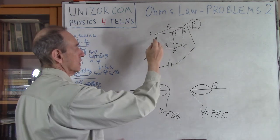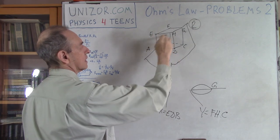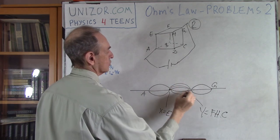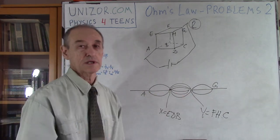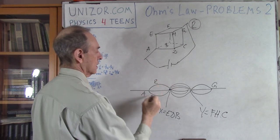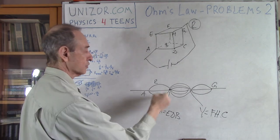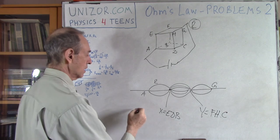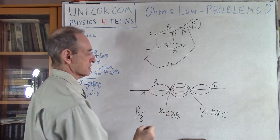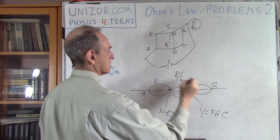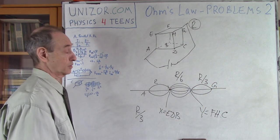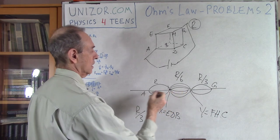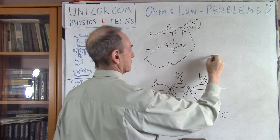Now, what's between X and Y? Each point E, B, and D has two connections to group Y. So basically I have two connections from E, two from B, and two from D — that's six parallel resistors of resistance R each. From A to X: three parallel resistors, combined resistance R/3. From X to Y: six parallel resistors, combined resistance R/6. From Y to G: three parallel resistors, combined resistance R/3.